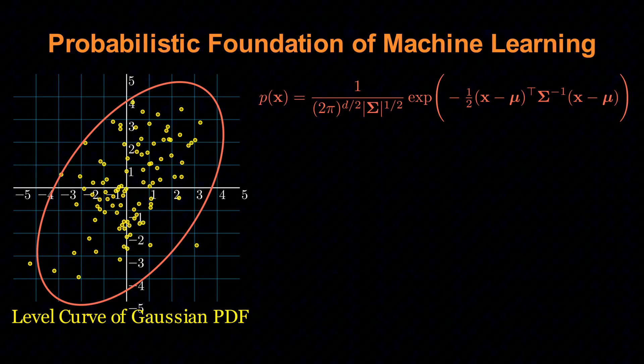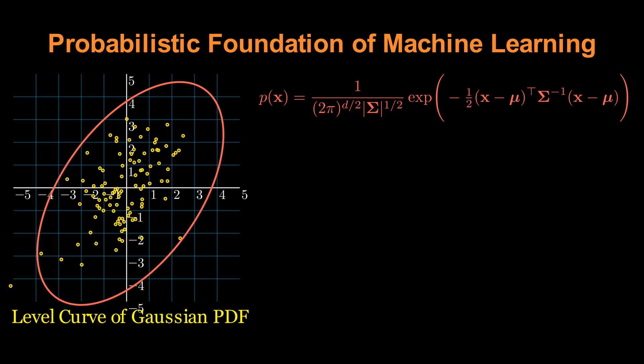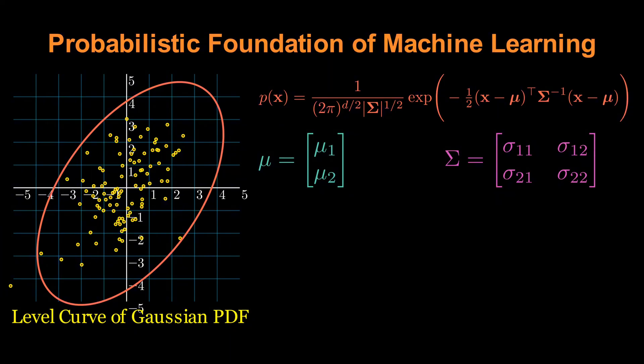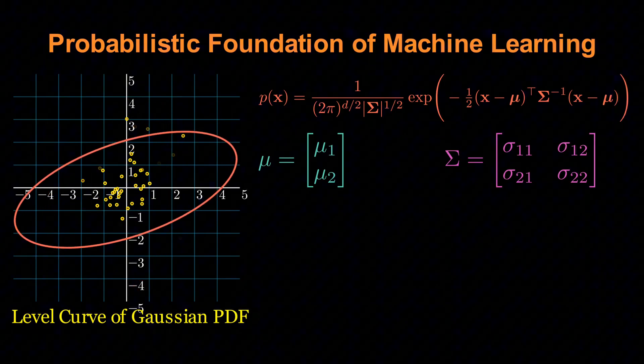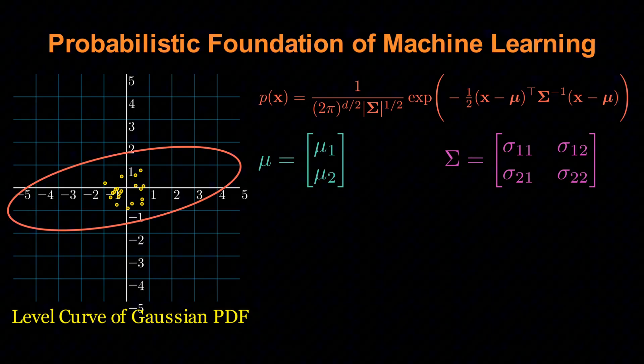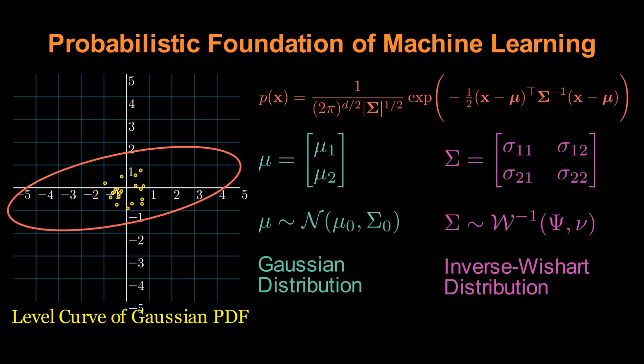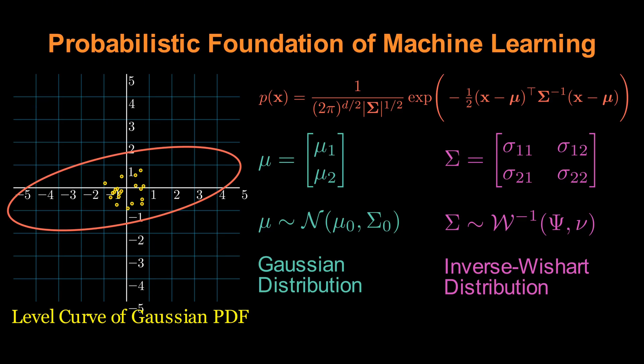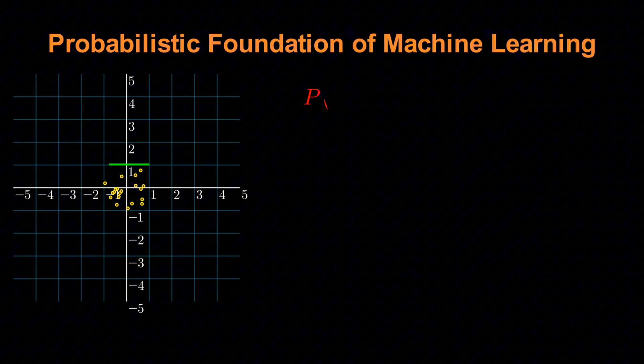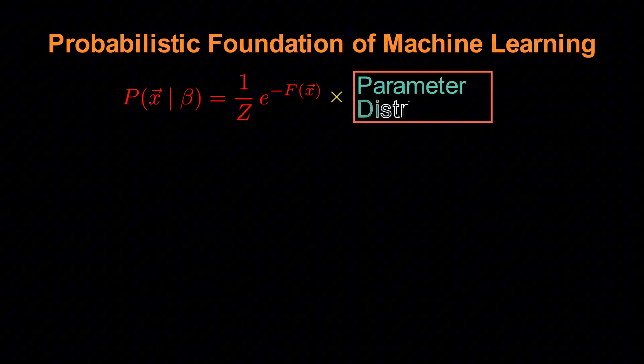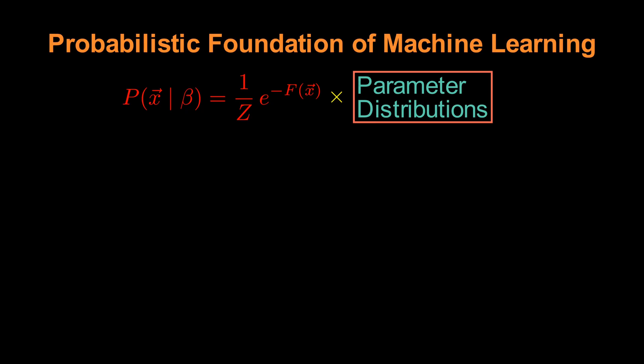When the data set is large, we can use the data directly to determine the parameters of this distribution with high certainty. But when the data set is small, we cannot pin down all parameters precisely. Instead, we assign them their own probability distributions. This changes the picture. Our overall probability is no longer just the probability of the data, but the product of this with the probability distribution that we assume for the parameters themselves.